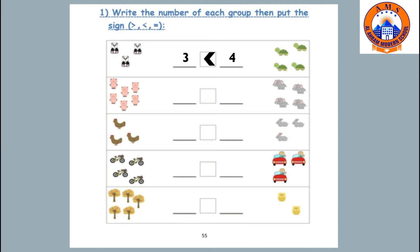Let's count how many pigs: one, two, three, four, five, six. And how many elephants? There are four elephants. So the suitable sign is greater than — six is greater than four.